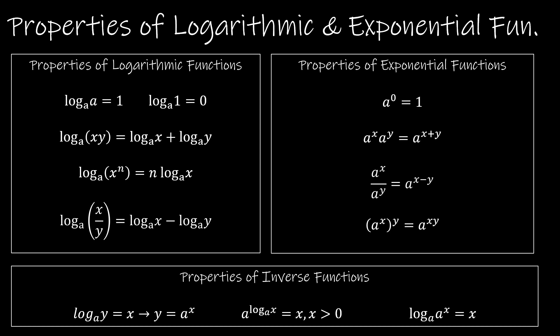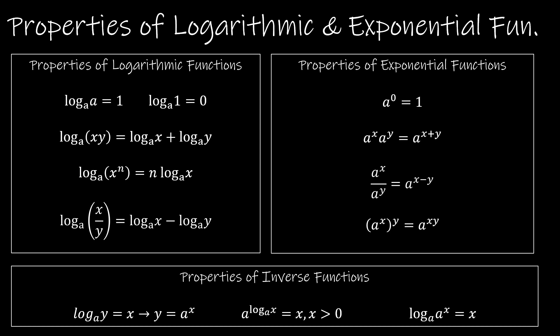Let's look at some properties of logarithmic and exponential functions. These are written generally, not specific to the natural log, but you could rewrite any of them using the natural log. For example, the natural log of x to the n equals n times the natural log of x. For exponentials, e to the x times e to the y equals e to the x plus y, and so on — this works for the natural exponential or for any other base.